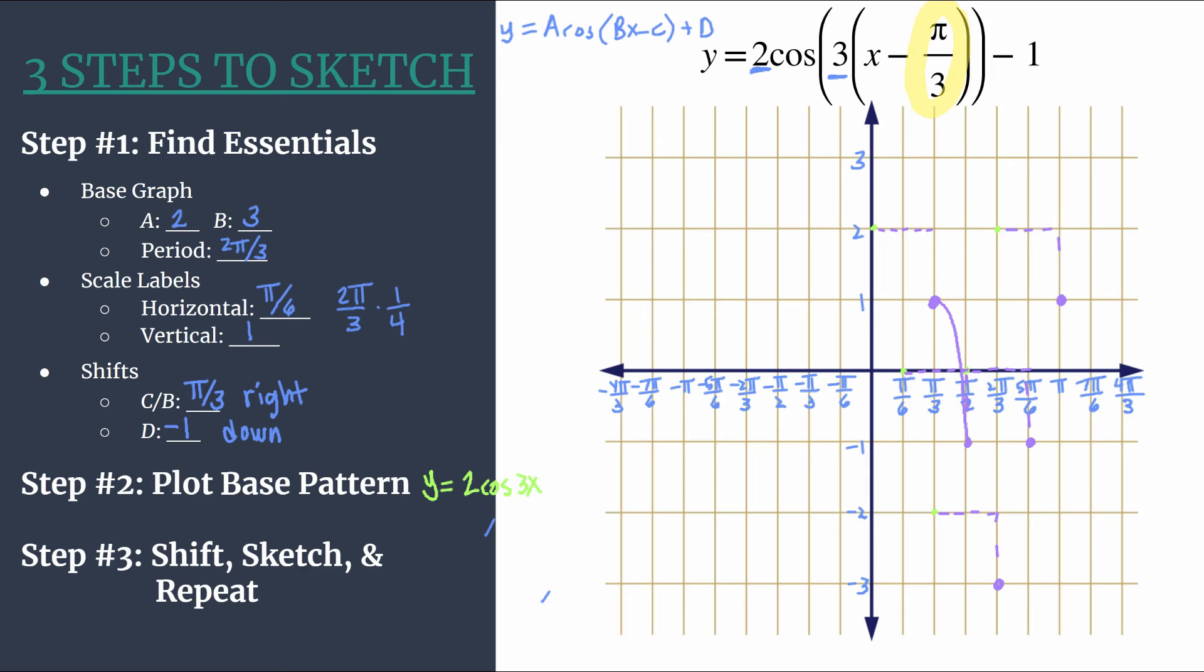So now we can sketch. We have our typical cosine curve here. And here is one cycle of our graph. Let's go ahead and repeat this.